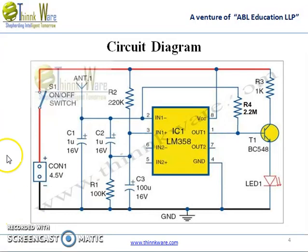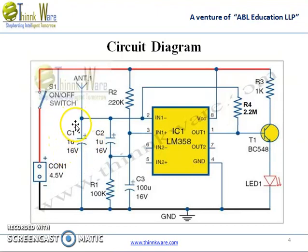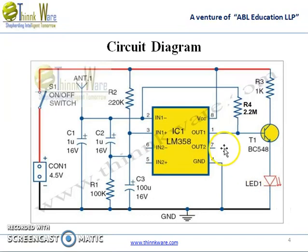Capacitor C1 is used to detect the RF signal from the mobile phone. When the mobile phone radiates energy in the form of an RF signal, C1 absorbs it and passes it to LM358 IC. This is indicated by the flashing LED. Transistor BC547 is used to amplify the signal obtained at pin 1 of LM358 IC.